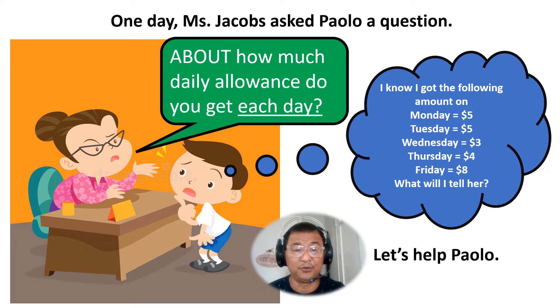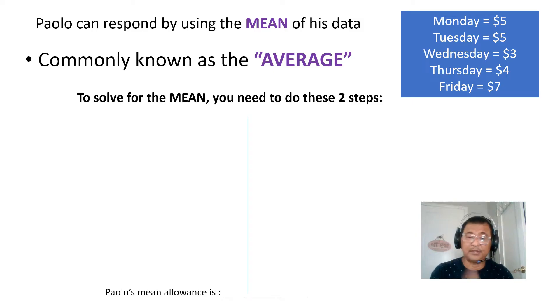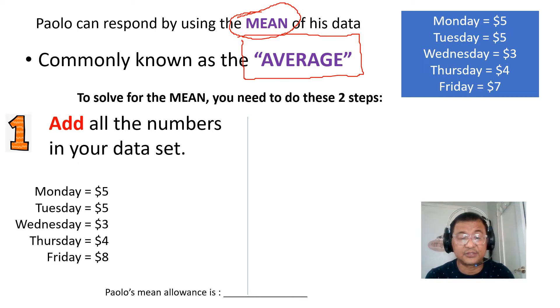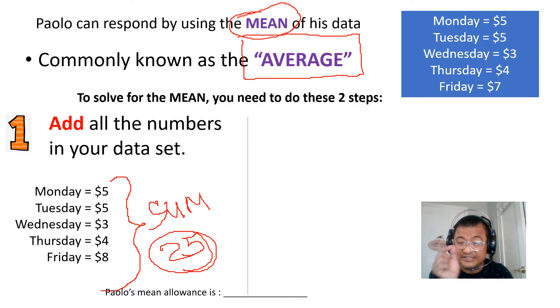Now, let's help Paolo. Paolo can respond by using the mean. Remember the word mean? It is commonly known as average. To solve for the mean, you have to do two things. Number one, add all the numbers in your data set. This is called the data set. And if you add all of this, your total or your sum will be 25. But 25 will not represent a daily amount, so there is a second step.